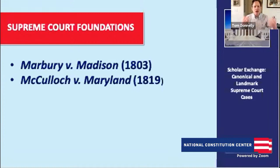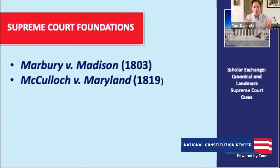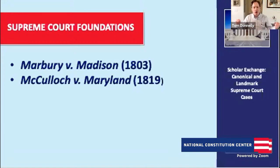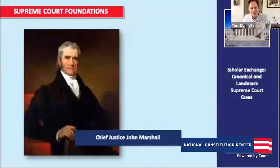Both of these cases come out of the Marshall Court — Chief Justice John Marshall, the early Supreme Court in the early 1800s. With Marbury, we get a key case dealing with the powers of the Supreme Court, really establishing the Supreme Court's role within our constitutional system. With McCullough v. Maryland, we get an early statement of how broad the powers of the national government are. Marbury addresses the Supreme Court; McCullough addresses the powers of the national government, especially Congress. Should we jump into Marbury v. Madison?